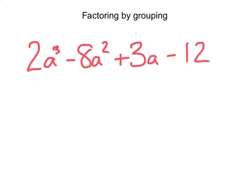Typically it will be the first two terms and the second two terms that go together. You can rearrange them if necessary, but in this case, this works out great because 2a³ and -8a² have factors in common. 2 goes into both of them and so does a².